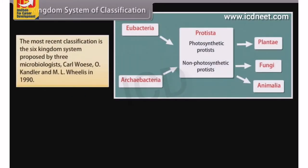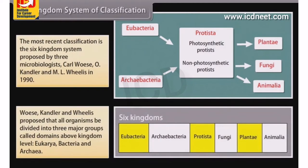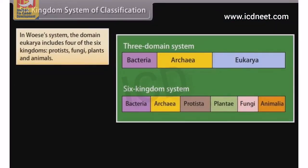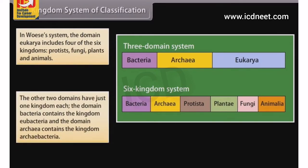The 6 Kingdom System of Classification: the most recent classification is the Six Kingdom System proposed by three microbiologists — Carl Woese, O. Kandler, and Emil Willis in 1990. They proposed that all organisms be divided into three major groups called domains above kingdom level: Eukarya, Bacteria, and Archaea. The domain Eukarya includes four of the six kingdoms: Protists, Fungi, Plants, and Animals. The other two domains have just one kingdom each — the domain Bacteria contains the kingdom Eubacteria, and the domain Archaea contains the kingdom Archaeabacteria.